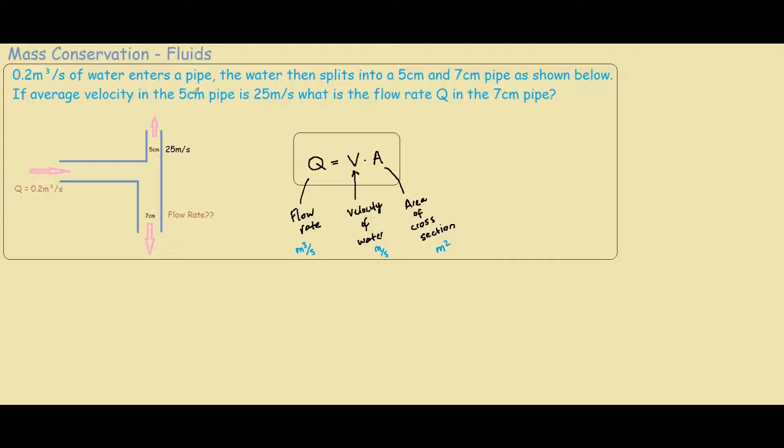Another thing to note is that mass conservation, the topic of this question, says that if you have some inflow here at section 1, you expect the outflow at sections 2 and 3 to equal the inflow of section 1. In equation terms, this simplifies to Q1 equals Q2 plus Q3.